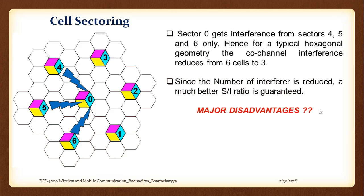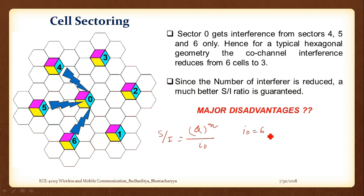We finished the discussion with a diagram showing that sector 0 is only affected by sectors 4, 5, and 6 — those with directional antennas pointing towards it. Sectors 1, 2, and 3 point in other directions and don't affect sector 0. This reduces the number of interferers in the equation. The best case equation gives η/I₀ = S/I, where I₀ = 6 for omnidirectional but reduces to 3 for a 3-sector antenna.